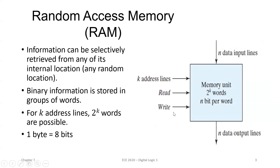The write input causes the binary data on the input-output line to be transferred to the memory, and the read input causes the binary data in the memory location to be transferred out of memory. So read means data is transferred out of memory and write means it is transferred to the memory. The memory unit is specified by the total number of words in it and the number of bits in each word. For k address lines, 2 power k words are possible. The selection of a specific word inside the memory unit is done by applying the k-bit binary address to the address lines.